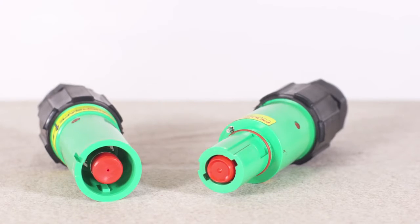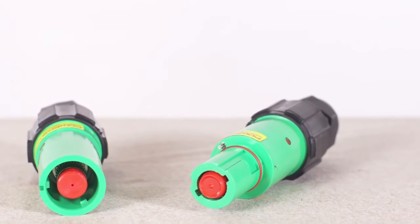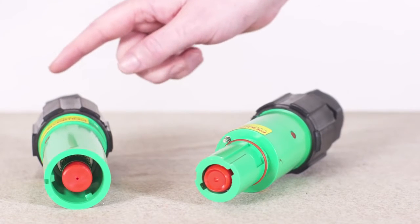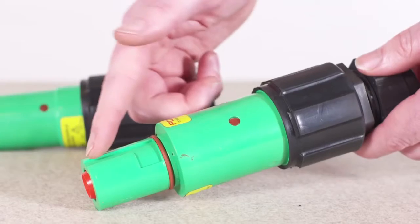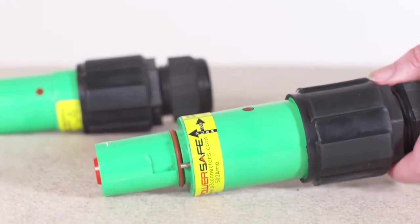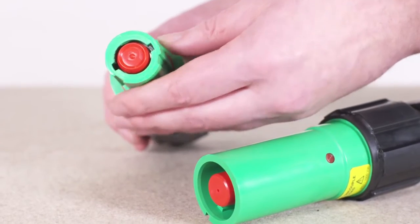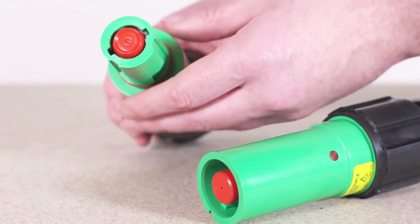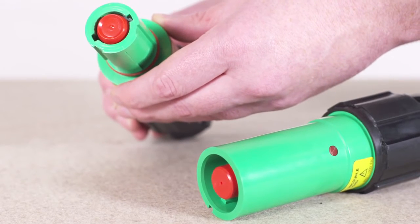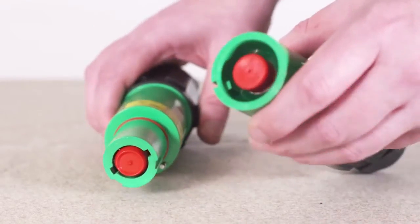PowerSafe connectors are designated as source or drain. The source connectors are intended to have their permanent connection in the direction of equipment receiving power. The role of male and female connectors is opposite to traditional usage in other designs of power connector. The PowerSafe source connector has a male pin and the drain connector has a female receptacle.